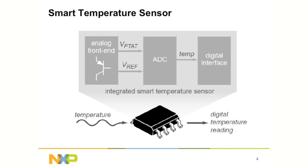An analog-to-digital converter measures the analog voltage from the diode and converts it to a digital number. The precision of the measurement, or number of bits of the A-to-D converter, is the temperature resolution.